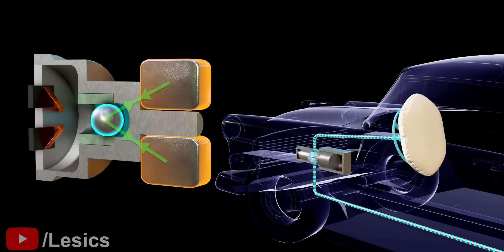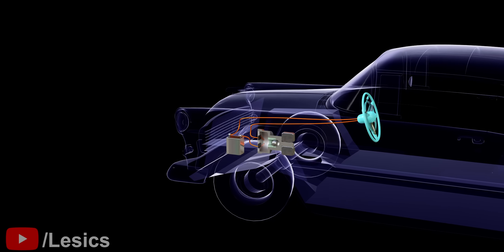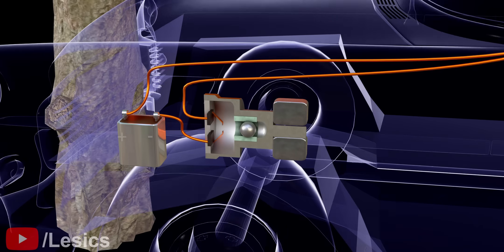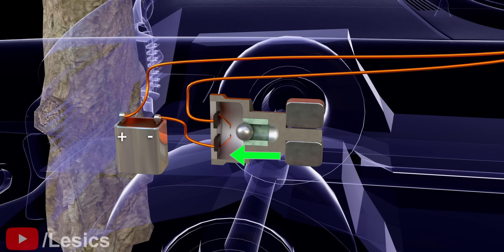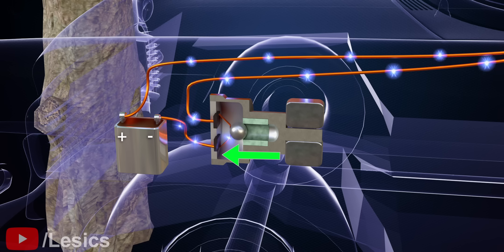When a collision occurs, the car decelerates very quickly, but the ball gets separated from the magnet due to its inertia. The ball moves forward to close the circuit and sends a signal to the inflator.